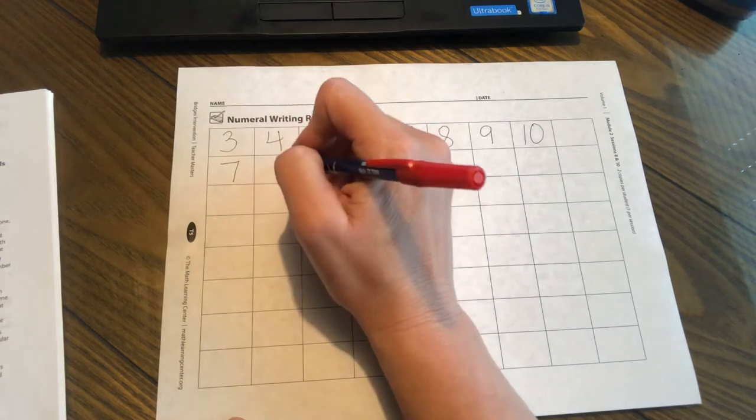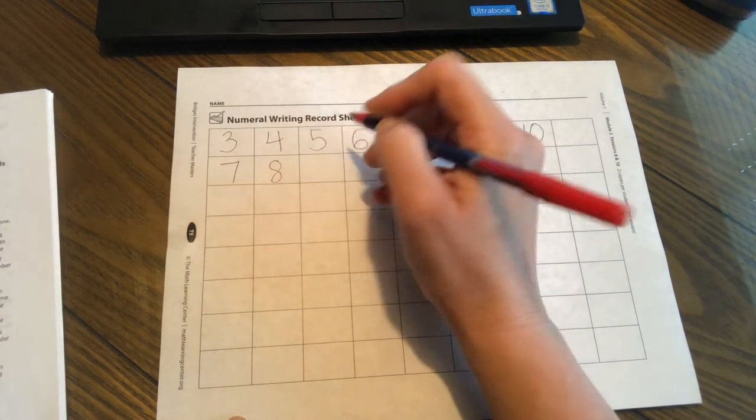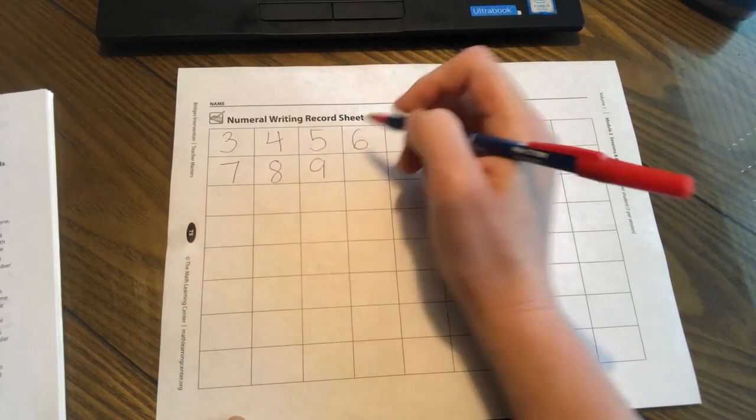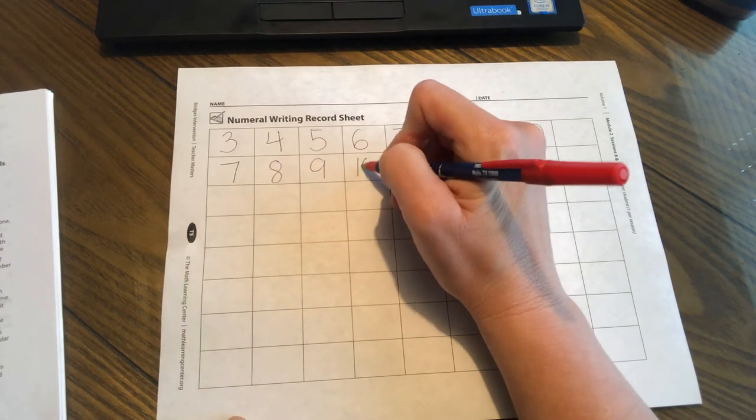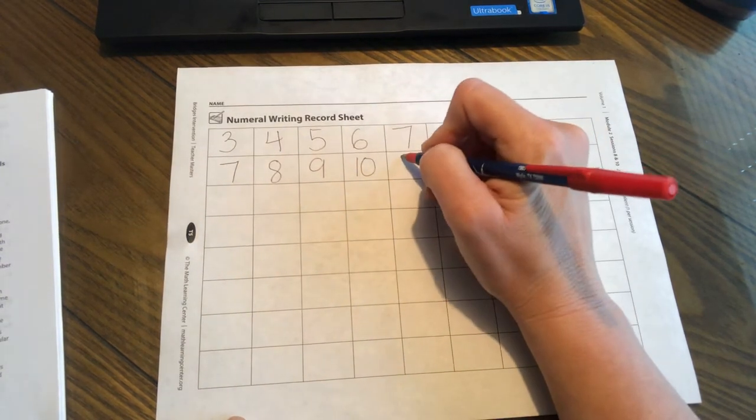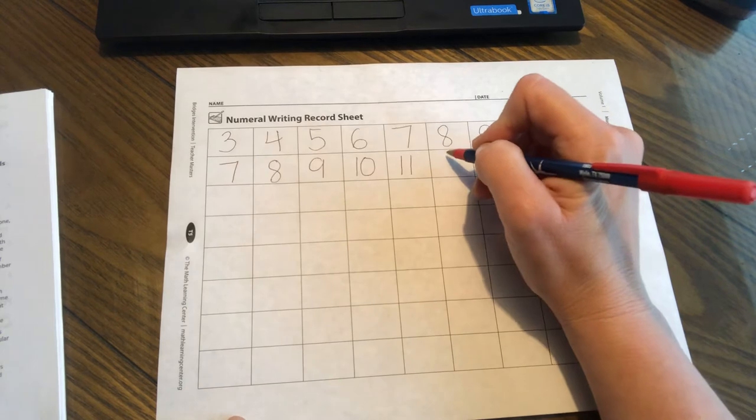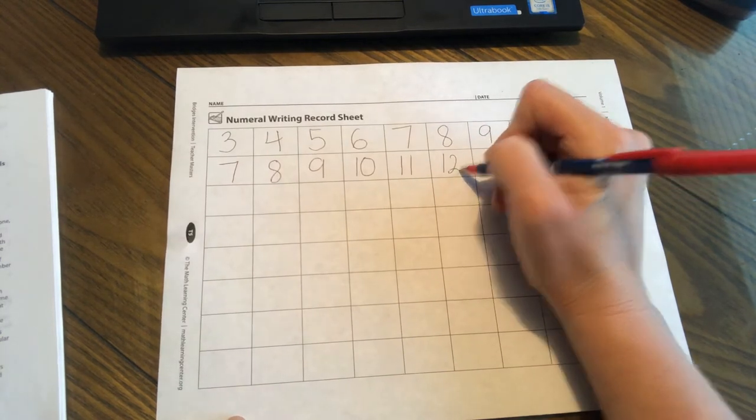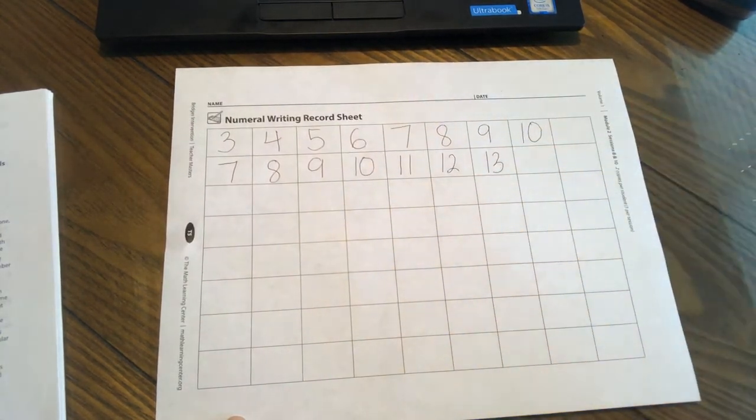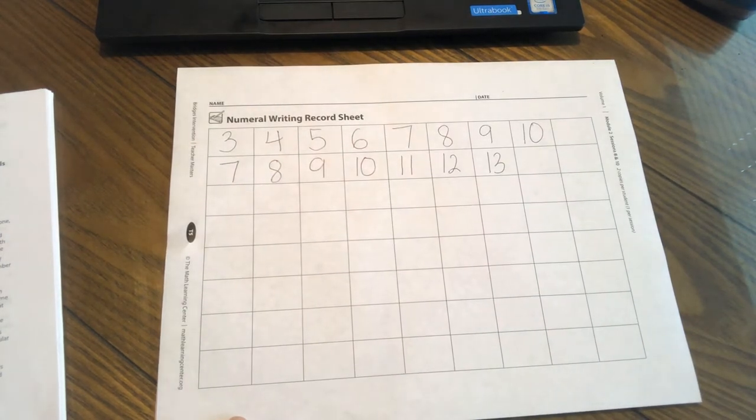So we have seven, eight, nine, 10, 11, 12, 13. Very good. Very good.